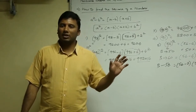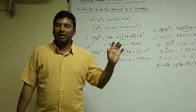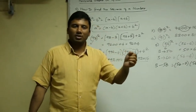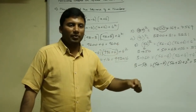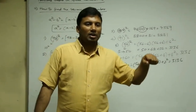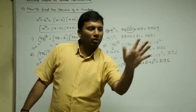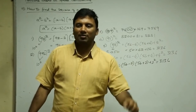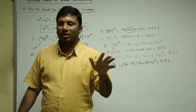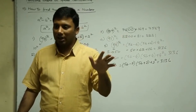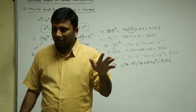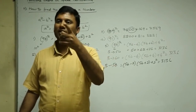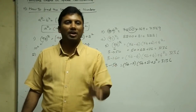Just see me and try to answer a few questions orally. 89²: don't use a pen. What is the first step? (89 - 11)(89 + 11) + 11² = 78 × 100 + 121 = 7921.